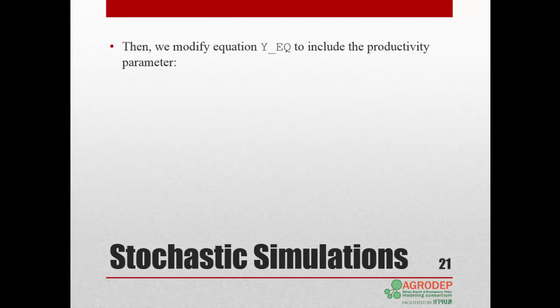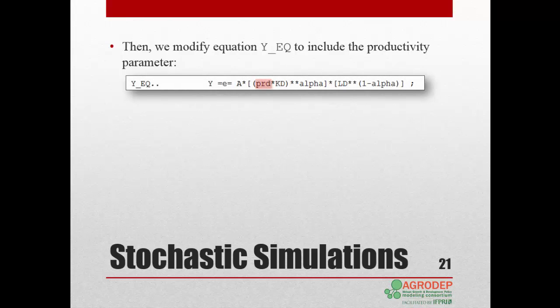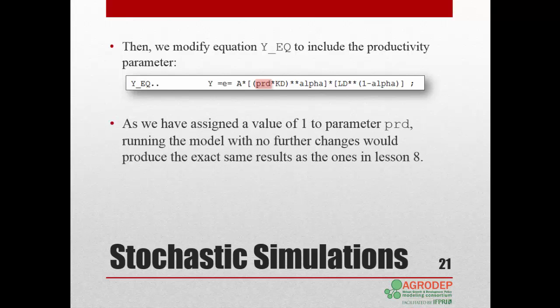We must also modify equation Y_EQ to include the productivity factor. So, we attach a productivity factor to the capital variable. Again, since we have assigned a value of 1 to parameter prd, if we ran the model at this time, we would obtain the exact same results as the ones in Lesson 8.